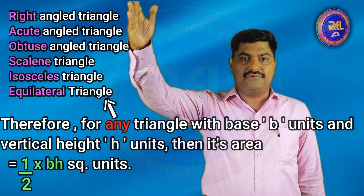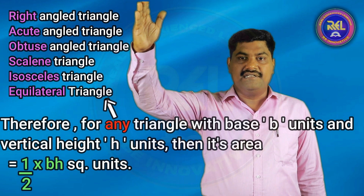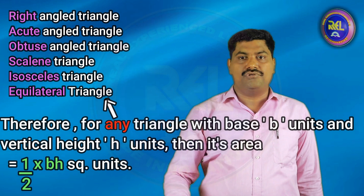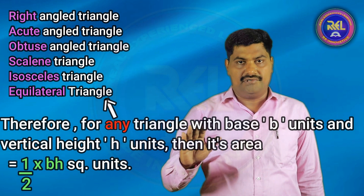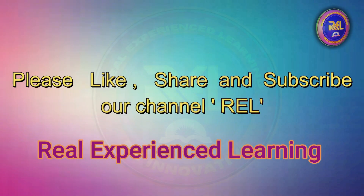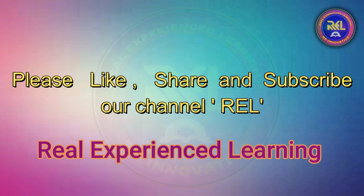Therefore, for any triangle with base B units and vertical height H units, its area equals half B H square units. Please like, share and subscribe our channel. Thank you.